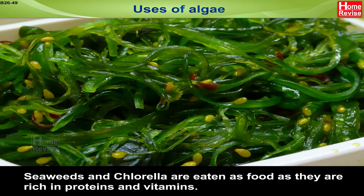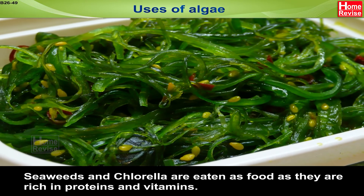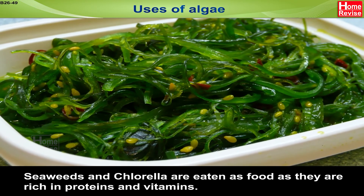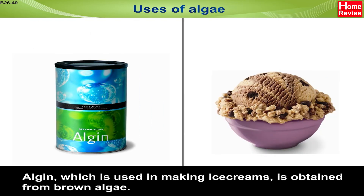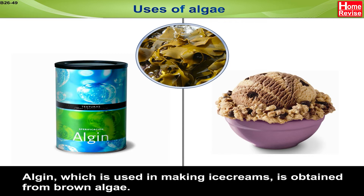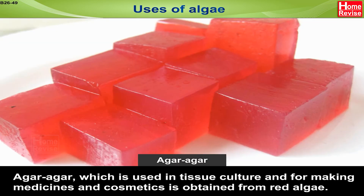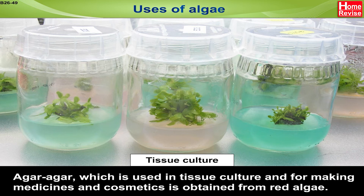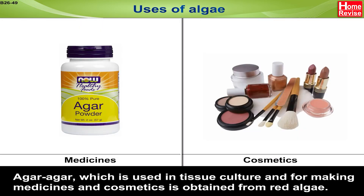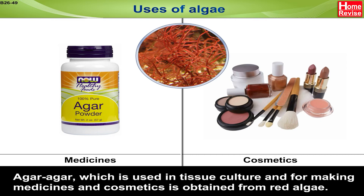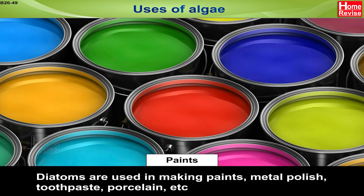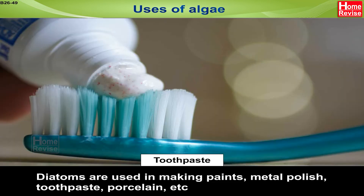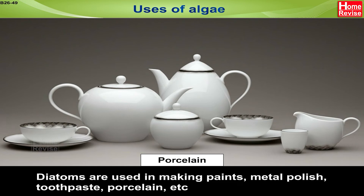Uses of algae: Seaweeds and chlorella are eaten as food as they are rich in proteins and vitamins. Algin, which is used in making ice creams, is obtained from brown algae. Agar-agar, which is used in tissue culture and for making medicines and cosmetics, is obtained from red algae. Diatoms are used in making paints, metal polish, toothpaste, porcelain, etc.